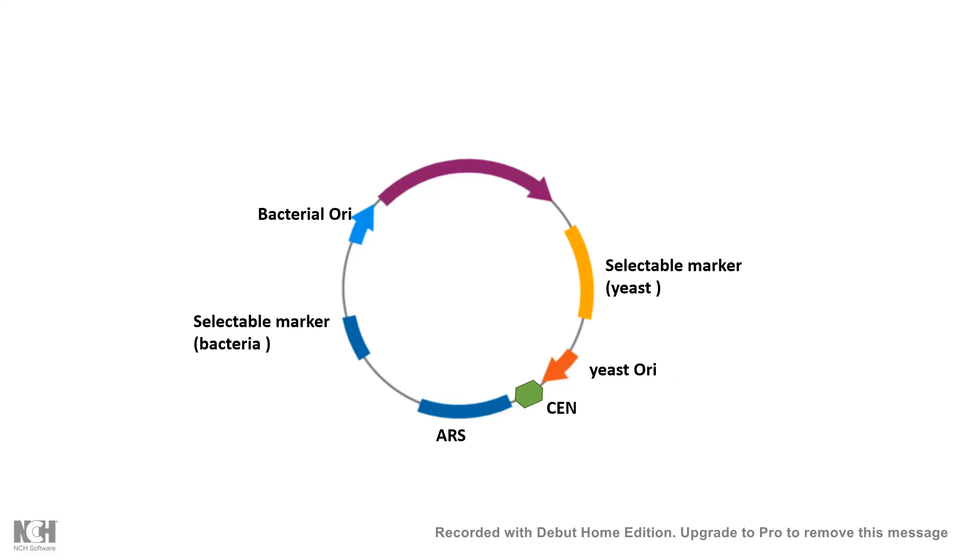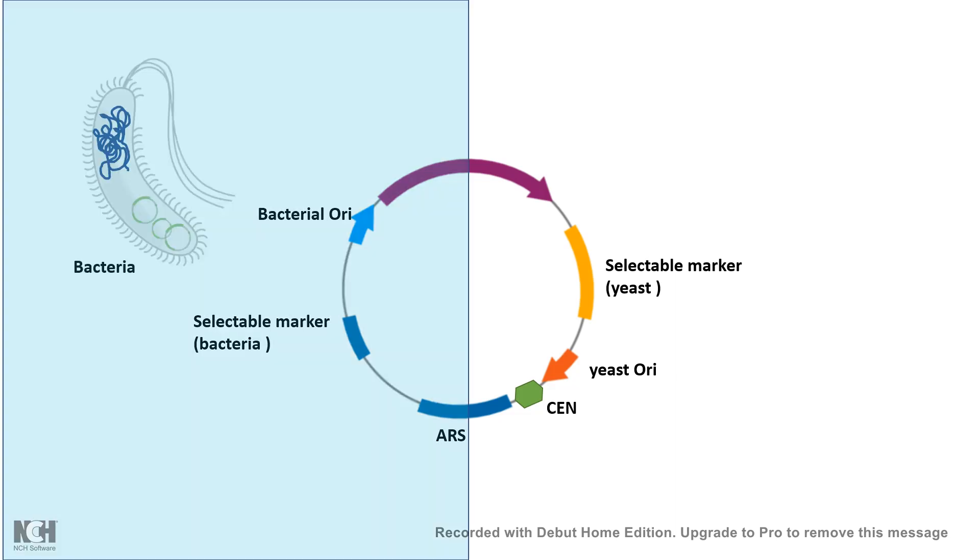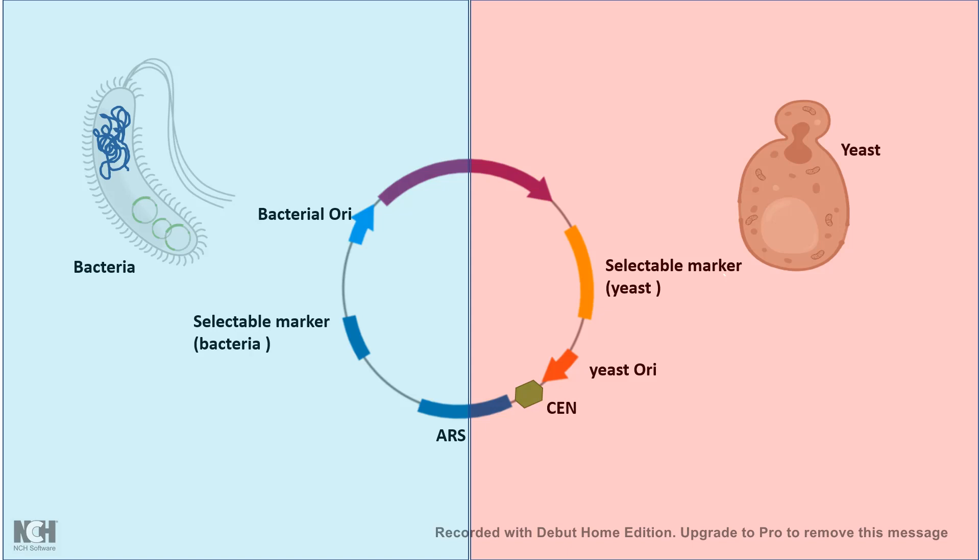In short, these vectors have all the features to clone it inside a bacteria or grow it inside a yeast, and that makes these vectors so useful.